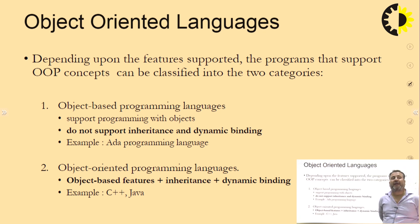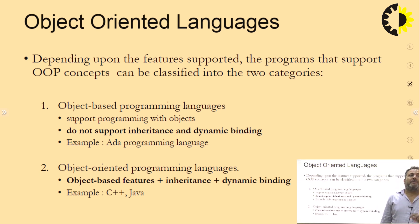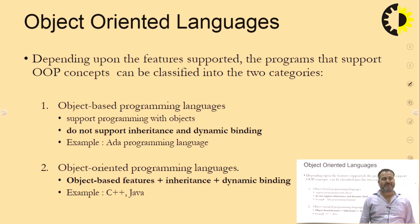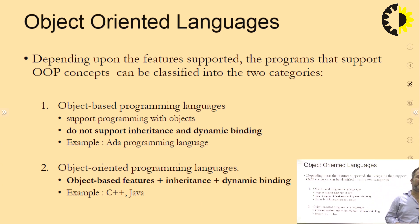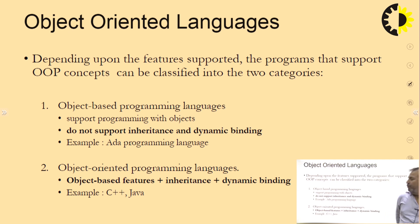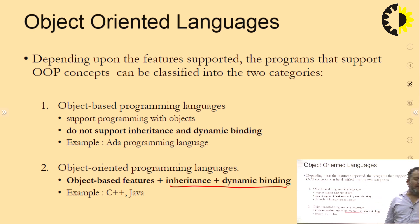Object-based programming languages miss the features of inheritance and dynamic binding — they do not support inheritance and dynamic binding, so they are called object-based languages. For example, ADA was object-based; it was not an object-oriented programming language. Object-oriented programming languages like C++ and Java support class, object, inheritance and dynamic binding. The last two features — inheritance and dynamic binding — are absent in object-based programming languages.